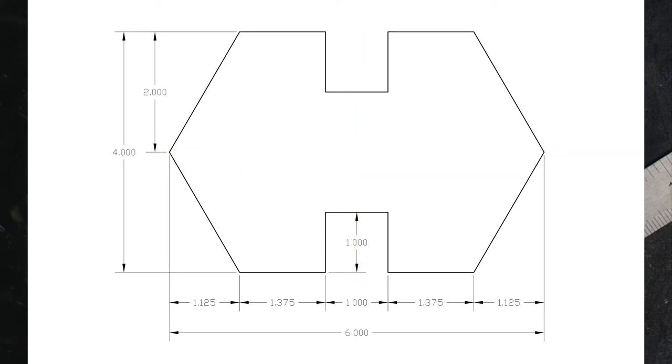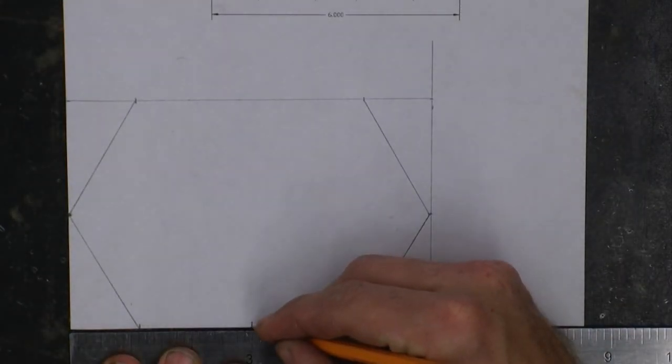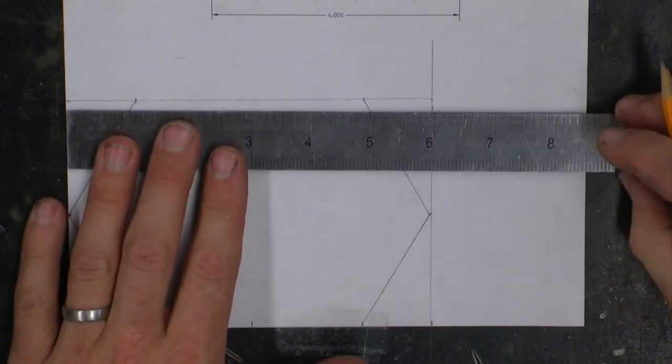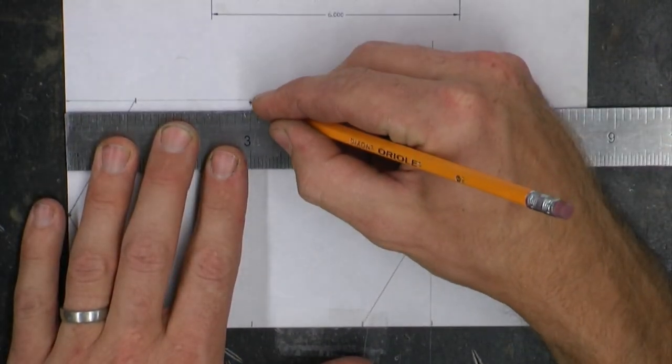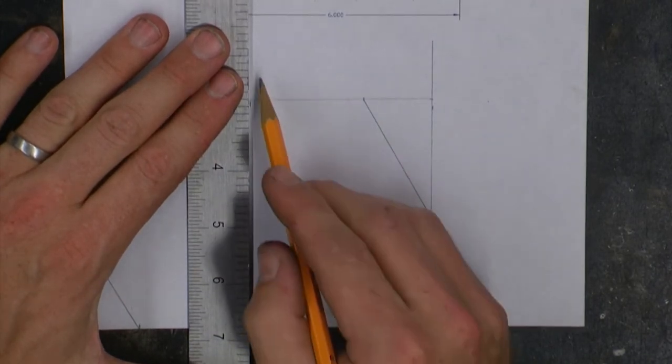So again, my total height was 4 inches and my total width was 6 inches. So I'm going to use those measurements to create a halfway point and add some light reference lines.